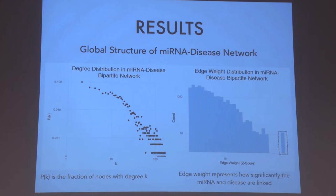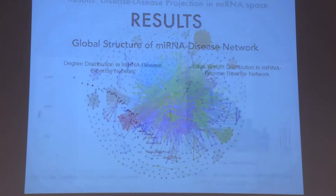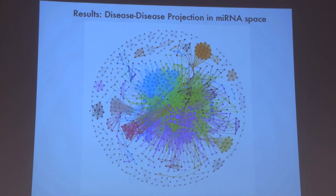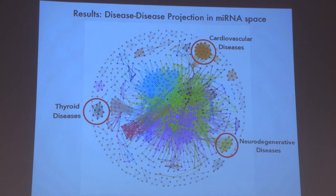Similar to what we saw quantitatively, we can also see visually in this Gephi image of a disease-disease projection in micro-RNA space. The different colors correspond to modularity classes as determined by a modularity algorithm. As you can see, there is very distinctive clustering in this network. More importantly, each of these modules on the network corresponds to individual diseases — for example, cardiovascular diseases, neurodegenerative diseases, and thyroid diseases.